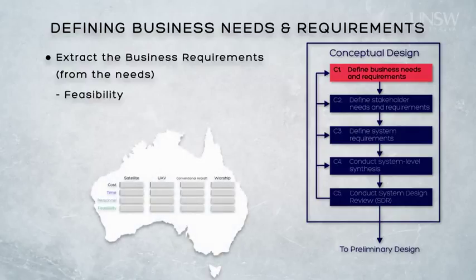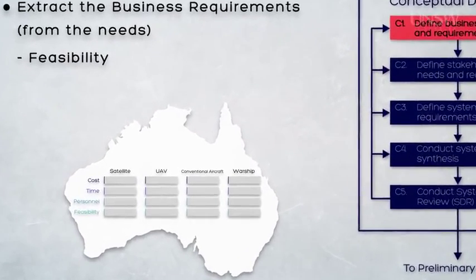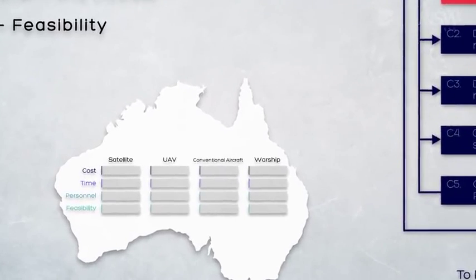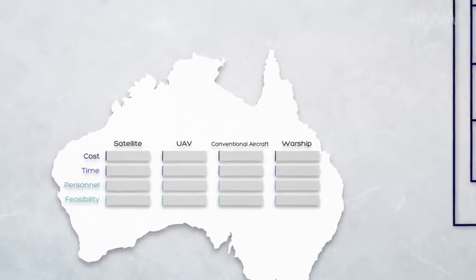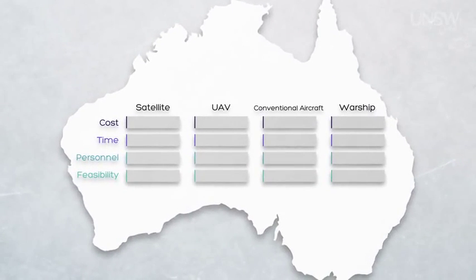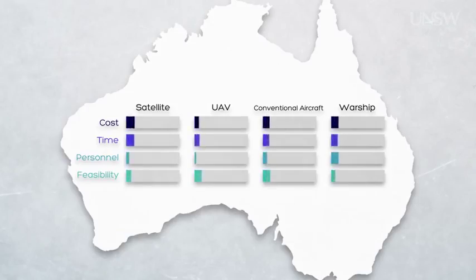For example, earlier I mentioned an example of a military capability gap associated with monitoring national borders. The likely options for doing this — that is the possible solution spaces — may include satellite surveillance, surveillance from uninhabited aerial vehicles, surveillance from conventional aircraft, or surveillance from warships.